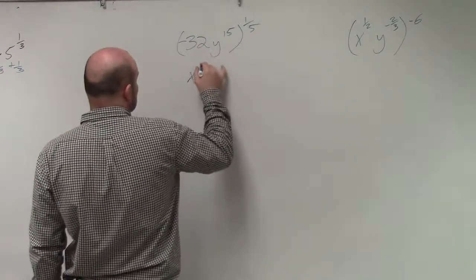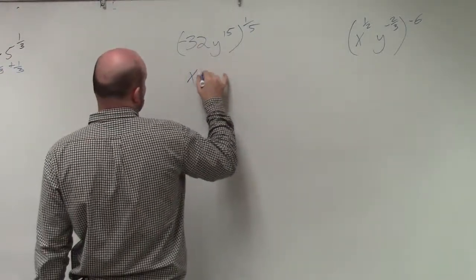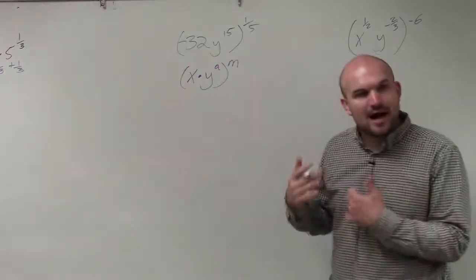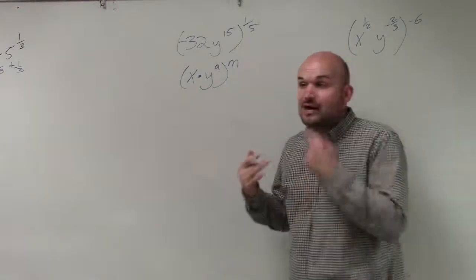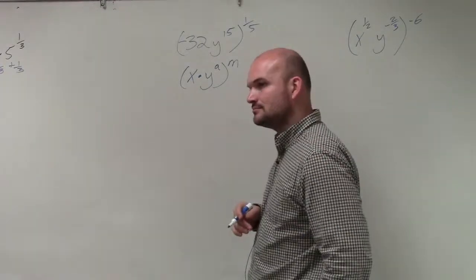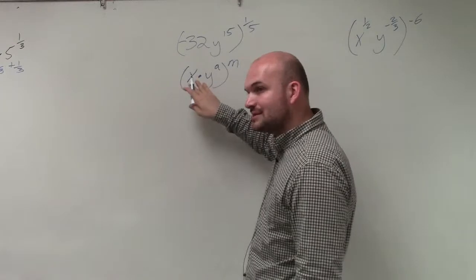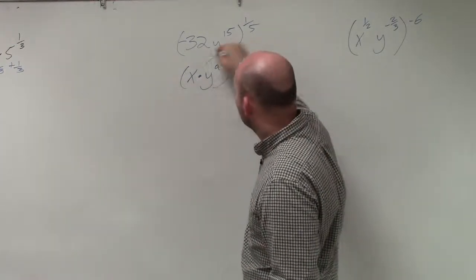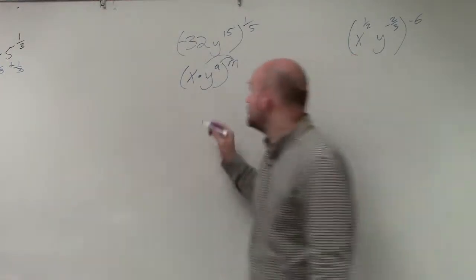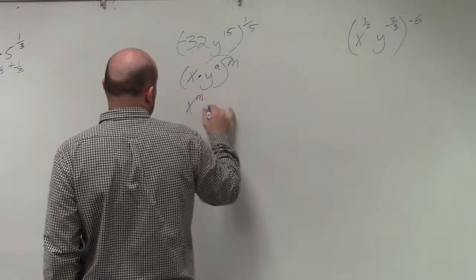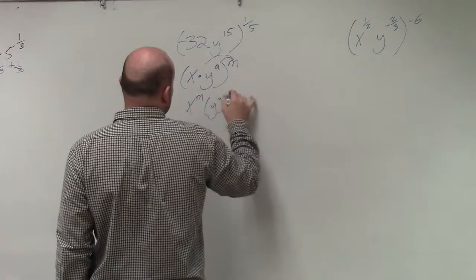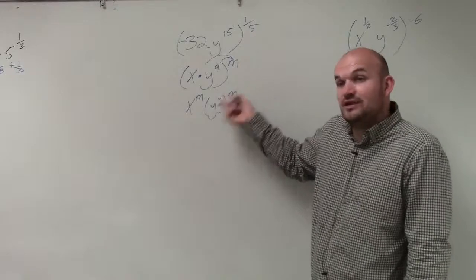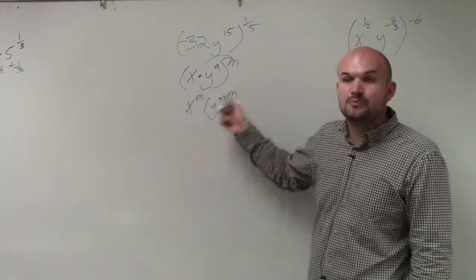If I have x times y to the a raised to the m power, remember we talked about the power to product rule. What the power to product rule says is that if we have a product raised to a power, we distribute that. So therefore, that's x to the m times y a to the m. So if something's already raised to a power, then I have to raise it again to another power. And then this would be the product rule.